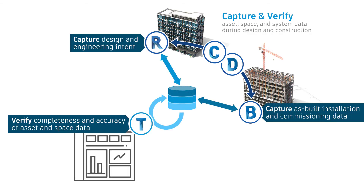Once the data requirements are specified, Autodesk Tandem enables you to capture the required data from the design and engineering intent, from the as-built installation and commissioning data, and to verify the completeness and accuracy of the asset, space, and system data. This data creates a digital replica of the facility within Autodesk Tandem and tracks every change made, providing a digital thread of information for every asset and space in the facility. Autodesk Tandem is designed to integrate with and extend our existing design and construction offerings such as Autodesk Revit, Autodesk Docs, BIM Collaborate, and Autodesk Build.